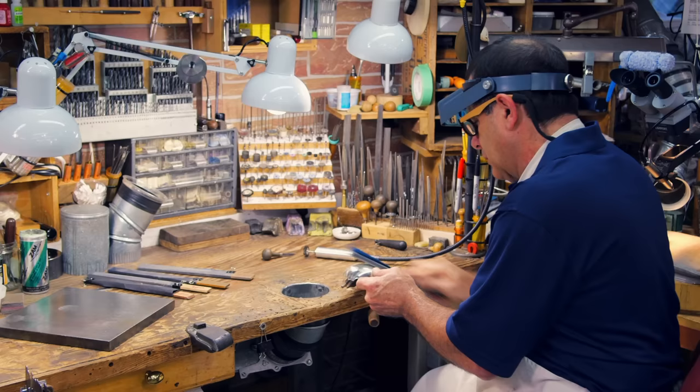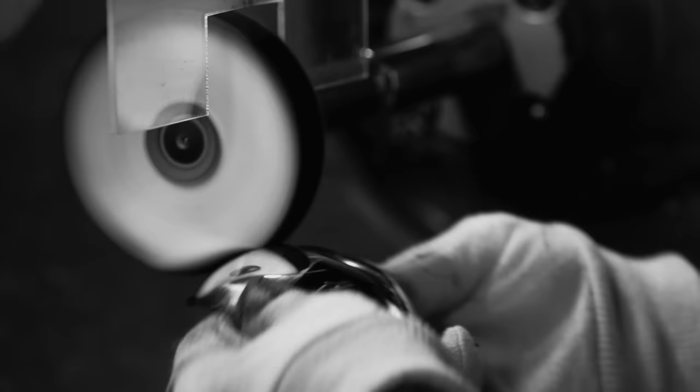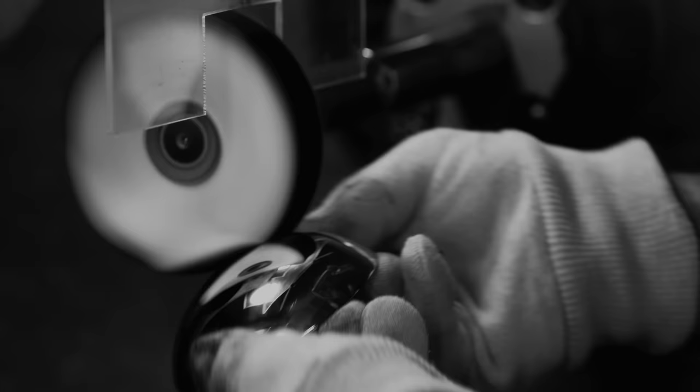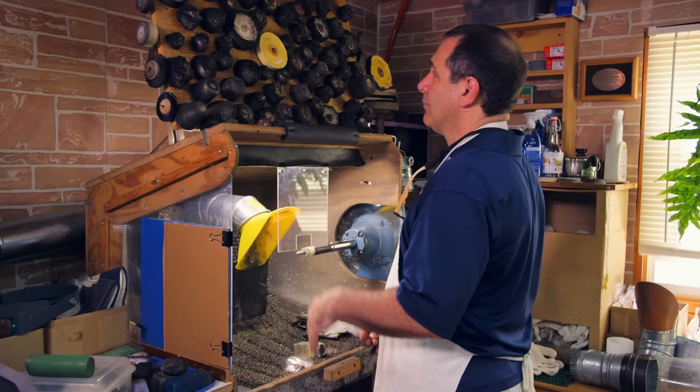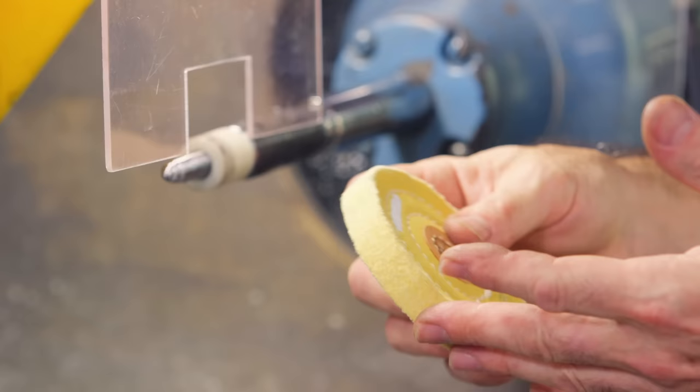And now I'm ready to polish. I'm here at my polishing lathe which has an enclosure to keep all of the dust and cotton fibers in this location. So I'm going to use a treated sewn buff and these buffs generally retain their fibers much better than muslin buffs.